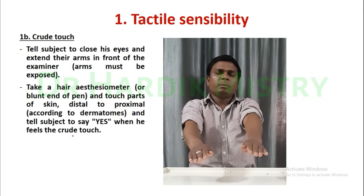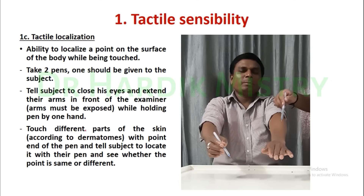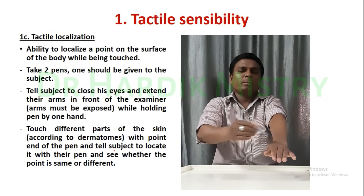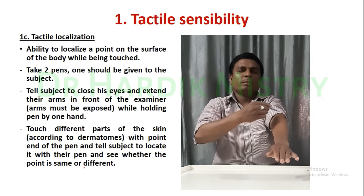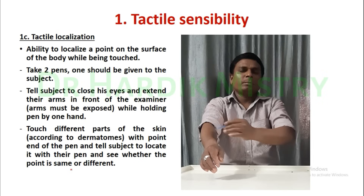Next, tactile localization. What is tactile localization? It is the ability to localize a point on the surface of the body while being touched. Take two pens — one should be given to the subject. Tell the subject to close his eyes and extend their arm. While holding a pen in one hand, touch different parts of the skin according to the dermatomes with the point end of the pen. Tell the subject to locate it with their pen and see whether the point is the same or different.